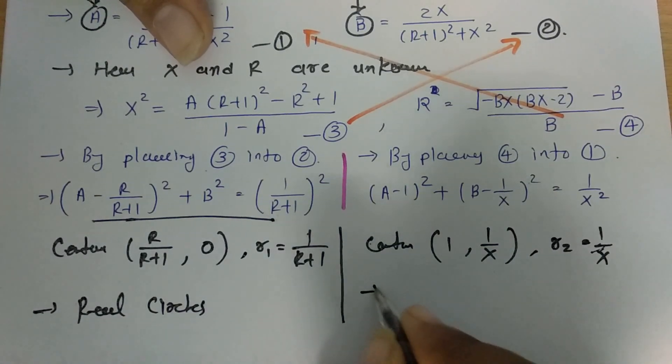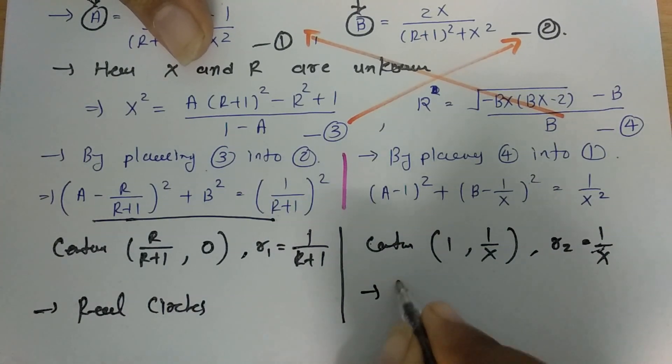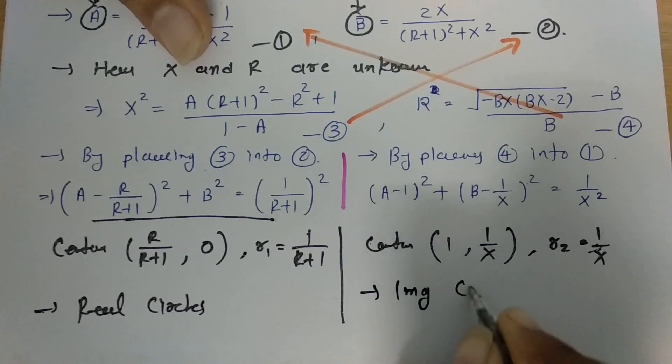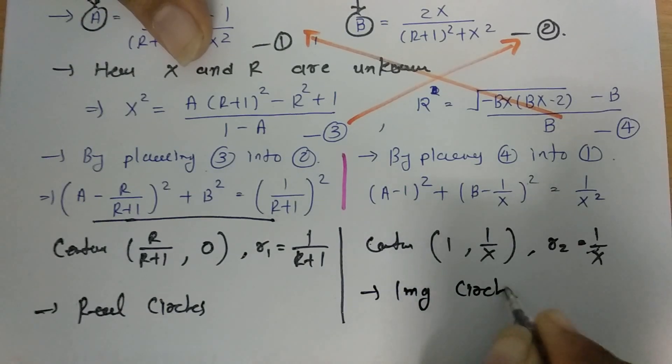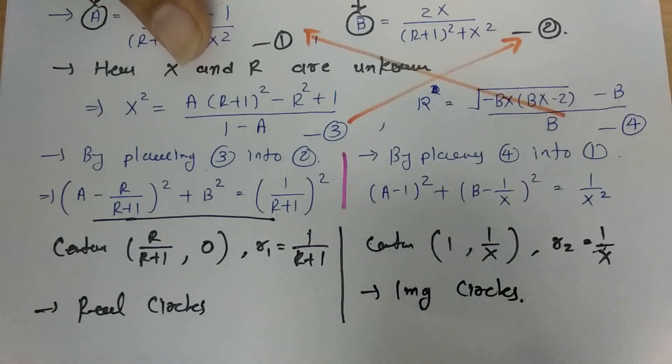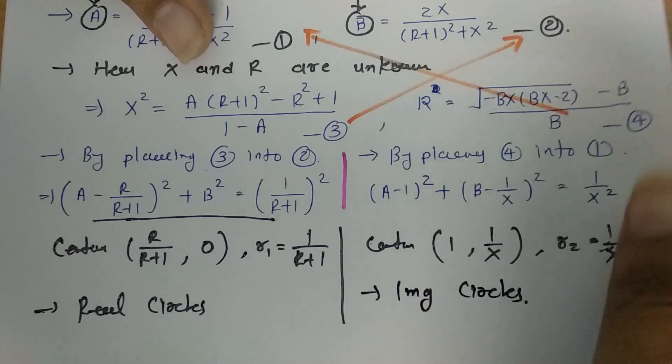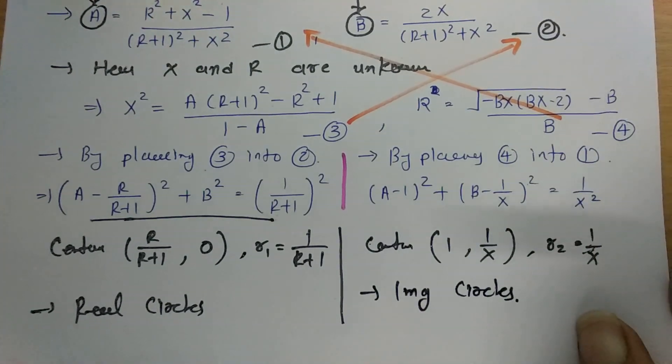The first circle equation represents real circles, with center at (R/(R+1), 0) and radius R1 = 1/(R+1). The second equation represents imaginary circles, with center at (1, 1/X) and radius R2 = 1/X. These two families of circles form the Smith chart.